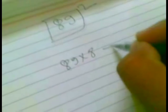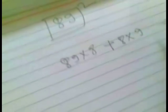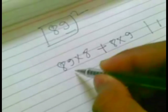As number is going to increase, the assumption will help us to maintain our accuracy. So, as we are going to find the square of 89, simply apply the same formula: 89 into 8 plus 8 into 9,